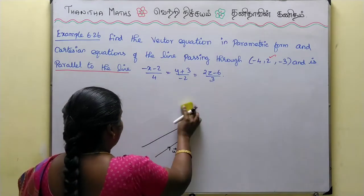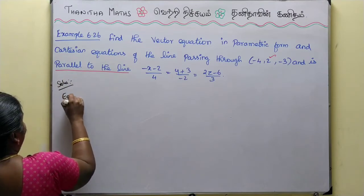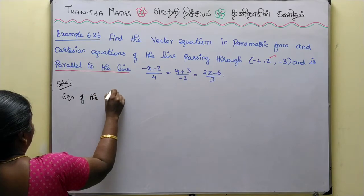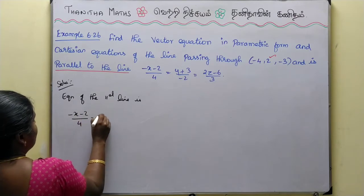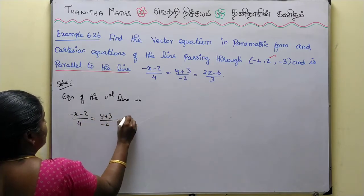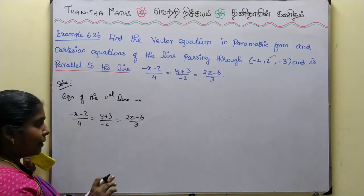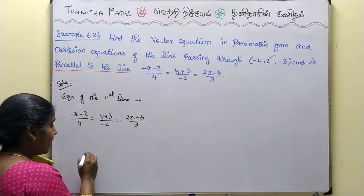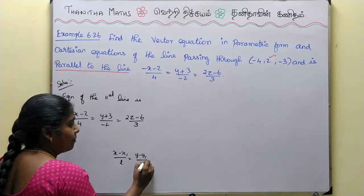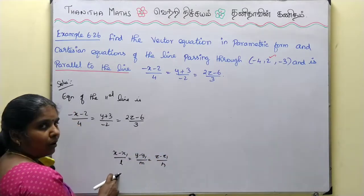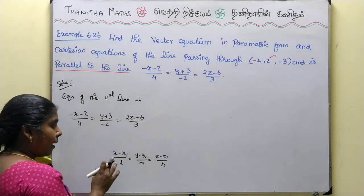First we will get the equation of the parallel line. The equation of the parallel line is: (-x - 2)/4 = (y + 3)/(-2) = (2z - 6)/3. We will use the formula x - x1 by L = y - y1 by M = z - z1 by N, where L, M, N are the parallel vector coefficients.